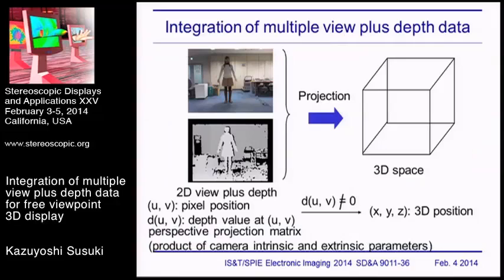Next, views plus depth data at four viewpoints are integrated into single point cloud data by the following procedure. Let UV be the pixel position and let d(UV) be the depth value at UV. If the depth value is not equal to zero, pixel position UV is projected to 3D position XYZ using the perspective projection matrix — that is, the product of camera intrinsic and extrinsic parameters.